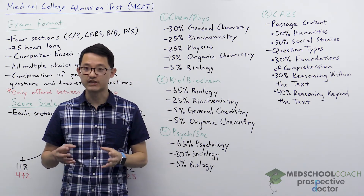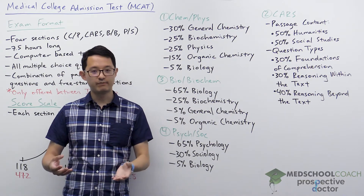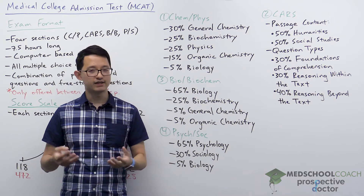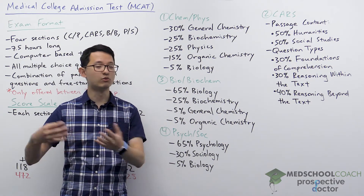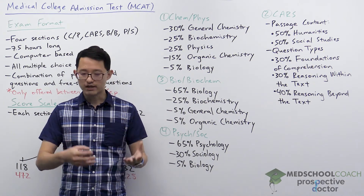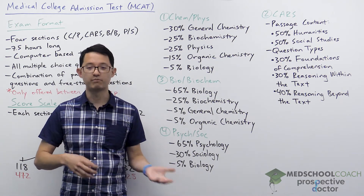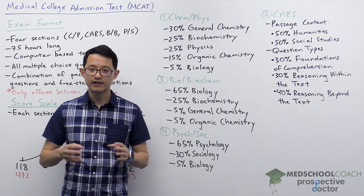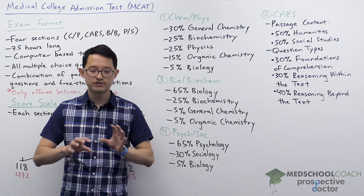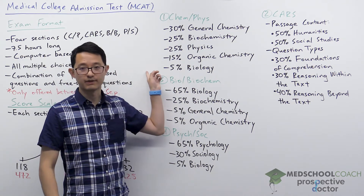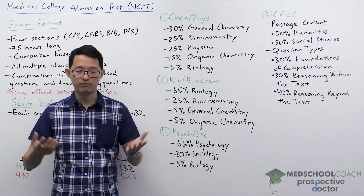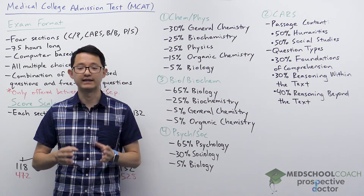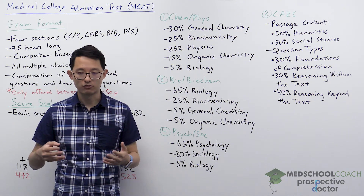What makes the Chem-Phys section very challenging is the broad range of subjects tested. In college, you usually took general chemistry and organic chemistry separately, and there wasn't much content overlap between them — general chemistry was quantitative with stoichiometry and pH calculations, while organic chemistry focused on drawing molecules and arrow-pushing diagrams. But on the MCAT, a single passage in the Chem-Phys section might include general chemistry, organic chemistry, and biochemistry questions together. You can't treat these subjects as entirely separate; you have to understand how they relate to each other.